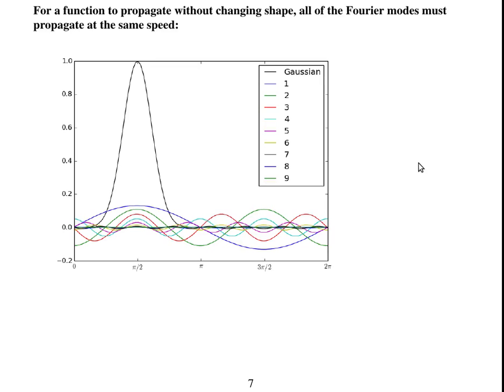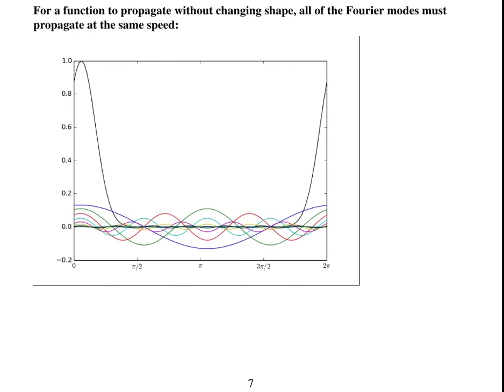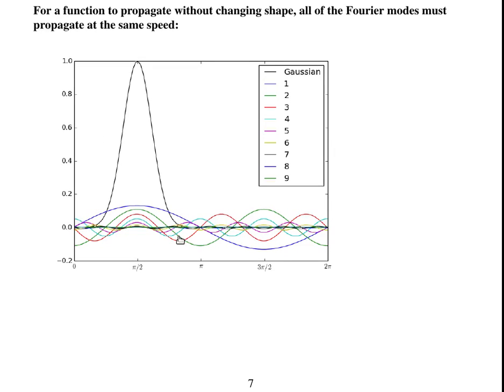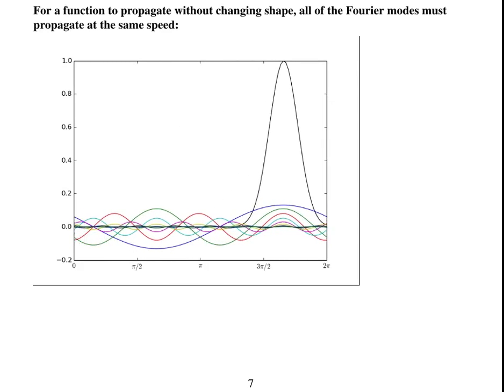So for a function to propagate without changing shape, all of the Fourier modes must propagate at the same speed. So this black line is a Gaussian, and the colored lines are the first nine wave numbers. So they're all propagating at the same speed, and the Gaussian is not changing shape.